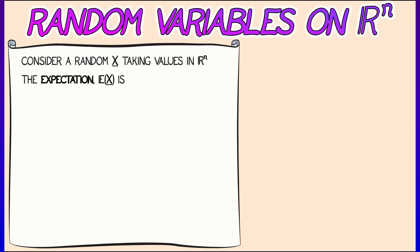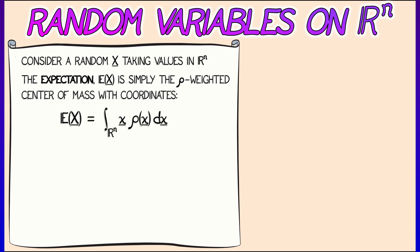The expectation is simply the center of mass with respect to this probability density rho. So, to compress things notationally, I would say that the expectation E(X) is the integral of x times rho of x dx, where that's a bit of a notational abuse. Actually there are n different integrals, one for each coordinate of that center of mass, of that expectation.